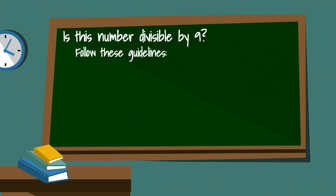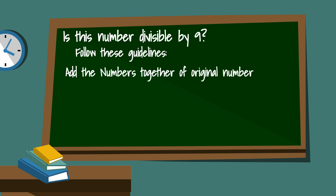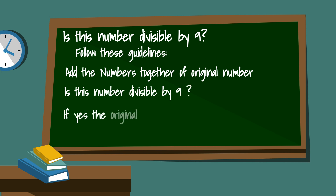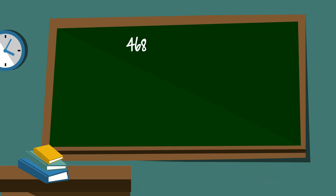First, take the number that you're trying to see if it's divisible and add all the digits together. Next, see if the sum is divisible by 9. If the answer is yes, then the original number is divisible by 9. So let's start with 468.